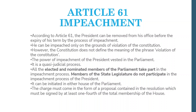Article 61 covers impeachment, which is very important. The President can be impeached — and that is only on the ground of violation of the Constitution. According to Article 61, the President can be removed from his office before the expiry of his term by the process of impeachment. The only basis on which we can remove the President is if he has violated the Constitution.